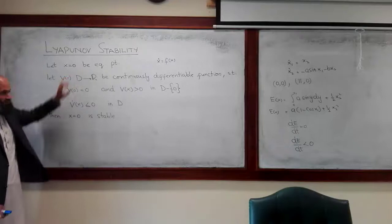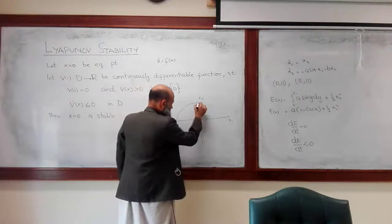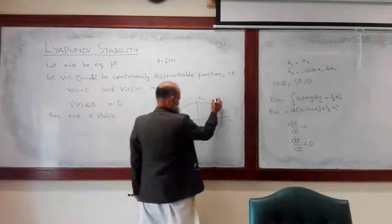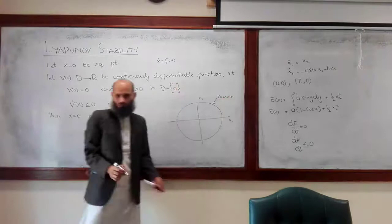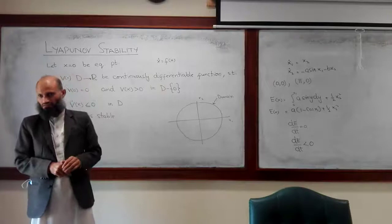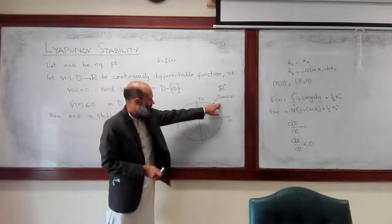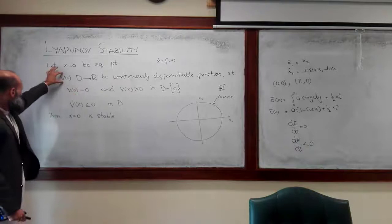What is the domain of interest? We may not be interested in the entire state space; rather, we may only be interested in some subset of the state space. That subset is called the domain. Sometimes we are interested in the entire state space, in which case that will be ℝⁿ — the nth-dimensional space. This domain is a subset of this nth-dimensional space, and this function maps this domain into the set of real numbers.